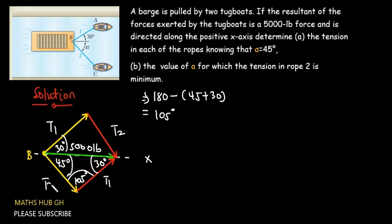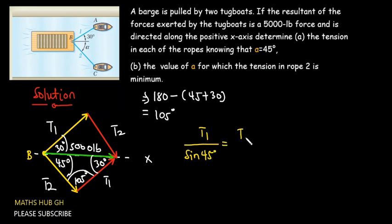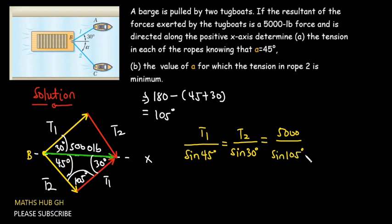To find T1 and T2, we can use the sine rule. You are going to have T1 divided by the sine of the angle opposite to T1, which is 45 degrees, equal to T2 divided by the sine of the angle opposite to T2, which is 30 degrees, equal to the 5000-pound force divided by the sine of the angle opposite to it, which is 105 degrees.